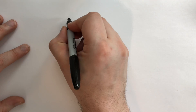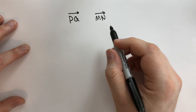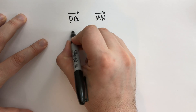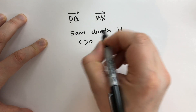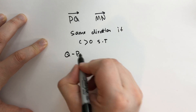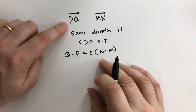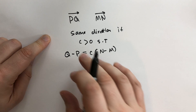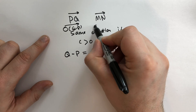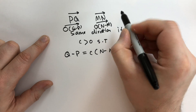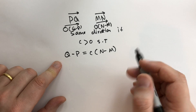Now let PQ and MN be located vectors. We say that they have the same direction if there is C greater than zero such that Q minus P equals C times (N minus M). What we've done is translate these to the origin — the directed vector PQ moved to the origin has the same direction as O to Q minus P, and similarly O to N minus M. So we can say Q minus P equals C times (N minus M) if they have the same direction and C is greater than zero.